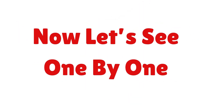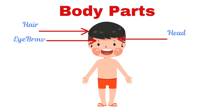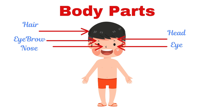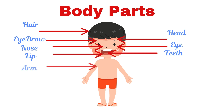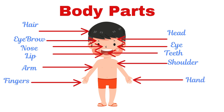Now let's see one by one. Head. Eyebrow. Eye. Nose. Teeth. Arm. Shoulder. Hand. Fingers.